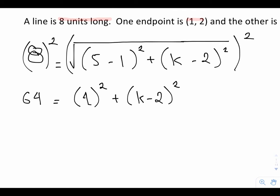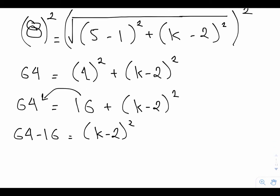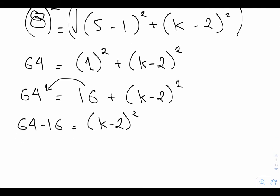Now if I square the 4, I get 64 equals 16, plus k minus 2 squared. And what I'm going to do now is bring the 16 over to the other side, so it becomes negative. That means I have 64 minus 16 equals k minus 2 squared. 64 minus 16 is 48 equals k minus 2 squared.